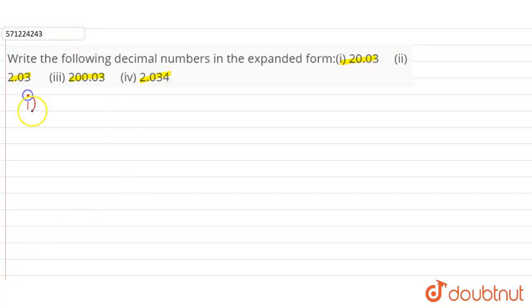So, first part is 20.03, which is equal to 2 × 10 plus 0 × 1 plus 0 ÷ 10 plus 3 ÷ 100. This is the expanded form.